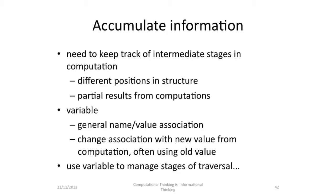As we iterate and recurse, we also need to keep track of intermediate information. We need to keep track of the different positions in structures and we need to keep track of the partial results. And it's at this point that you want to introduce a variable. Too much computing teaching focuses on the variable as the starting point — I think this is really misguided. We need to focus on the information structure as the starting point, traversing the information structure, and then only introduce variables as a way of accumulating intermediate information. We can talk about a variable as a name-value association, and about assignment as a way of changing association with a new value from a computation, but often using the old value. And we also need to use a variable to manage the stages of traversal to keep track of where we are.